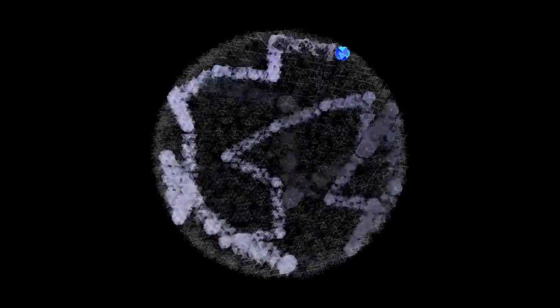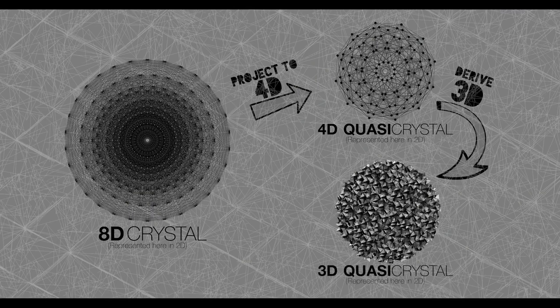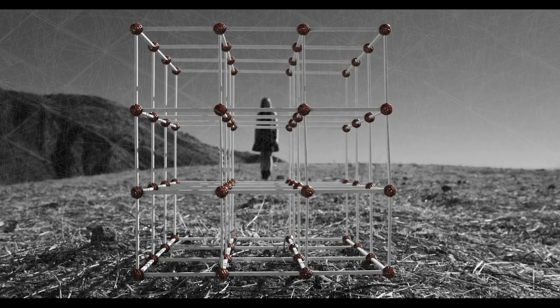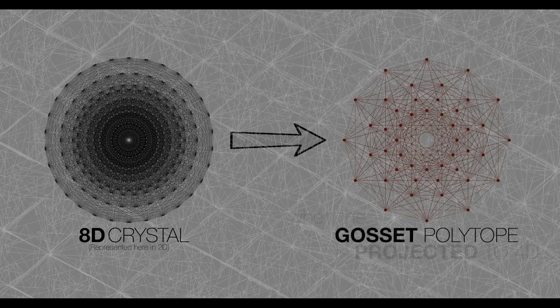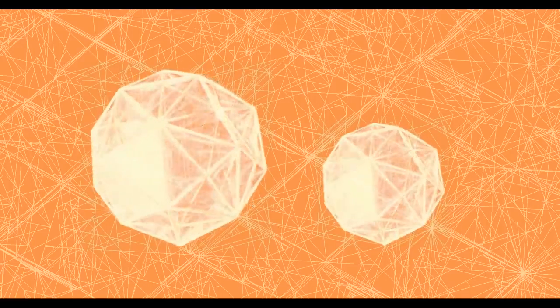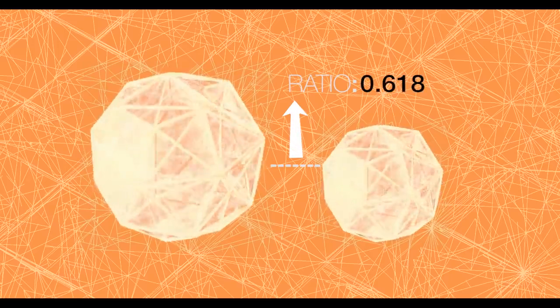To generate that 3D quasicrystal — the substructure of the pixelated fabric of reality — we project this 8D crystal to 4D, then convert that to 3D. Just like the basic cell shape of the 3D cubic lattice is the cube, the cell shape of the E8 lattice is an 8D shape with 240 vertices, called the Gossett polytope. When the Gossett polytope is projected to 4D, it becomes two identical shapes of different sizes. The ratio of their sizes is a unique number: 0.618, also known as the Golden Ratio.